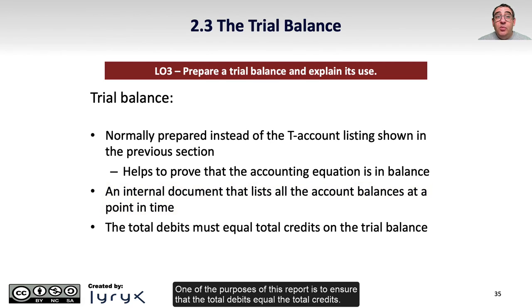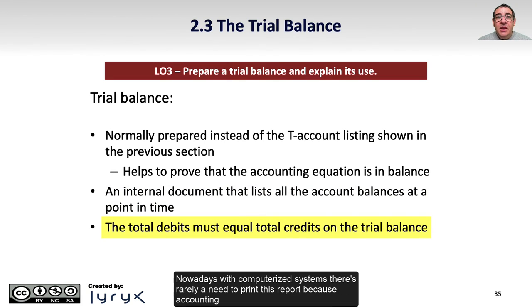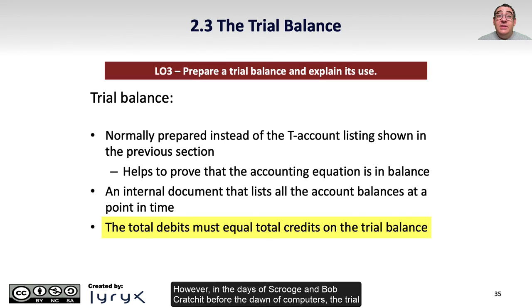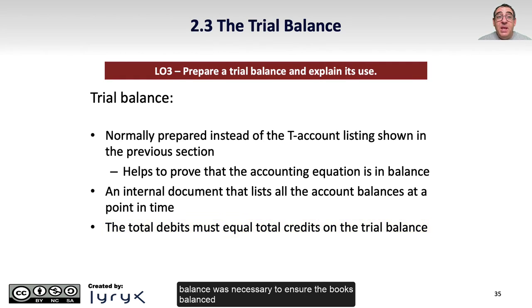One of the purposes of this report is to ensure that the total debits equal the total credits. Nowadays with computerized systems, there is rarely a need to print this report because accounting systems have checks and safeguards to prevent the creation of transactions that don't balance. However, in the days of Scrooge and Bob Cratchit, before the dawn of computers, the trial balance was necessary to ensure the books balanced.